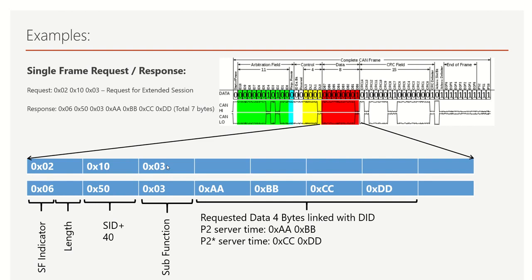The service has different sub-functions: 0x01 for default session, 0x02 for programming session, and 0x03 for extended session, which is what we are targeting. Coming back to the first byte, this is the PCI (Protocol Control Information) byte. It has two nibbles: the first nibble indicates the single frame type (value 0), and the second nibble indicates the actual data length. In this case the length is 2 bytes, so the second nibble is 0x02.